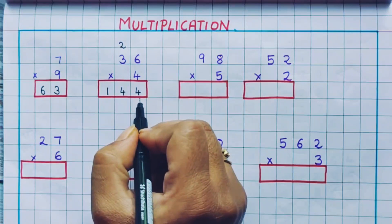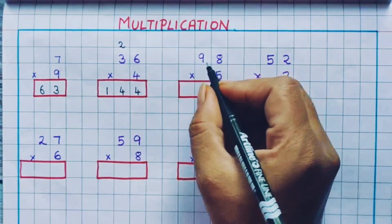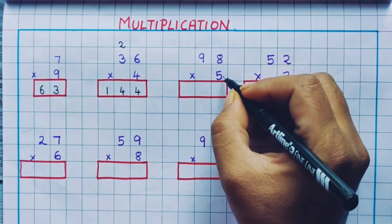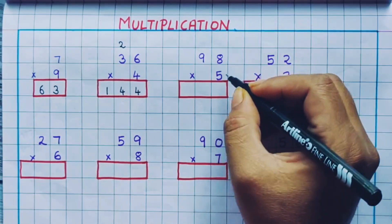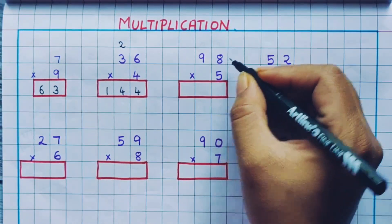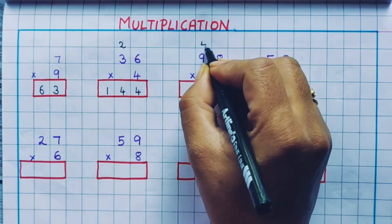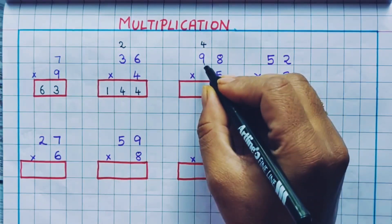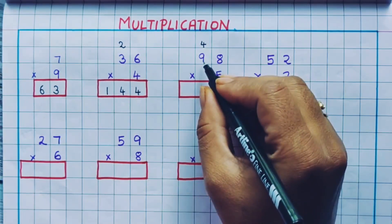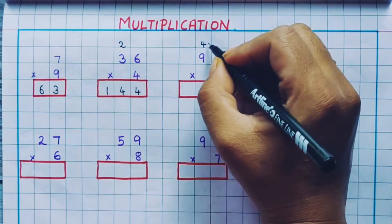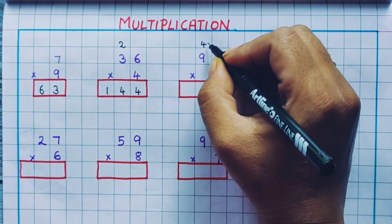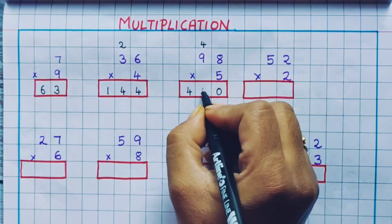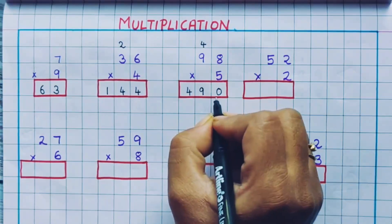36 into 4 is 144. Now let's see the next one: 98 into 5. First we will multiply 5 into 8. 5 8s are 40, so we write 4 as a carryover and 0 here. Now 5 9s are 45, and 45 plus 4 is 49. So we write 49 here, and the answer is 490.